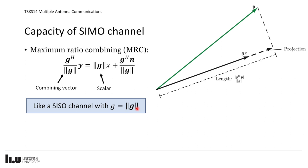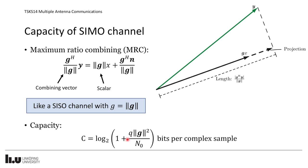The SIMO capacity C = log₂(1 + Q·‖**g**‖²/N₀) is very similar to the SISO formula, but instead of a single |G|² we now sum the squared magnitudes of all M channel elements. That is what the squared norm of the vector computes, giving a gain proportional to the number of receive antennas.